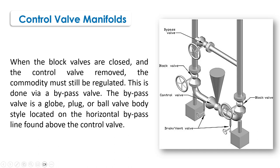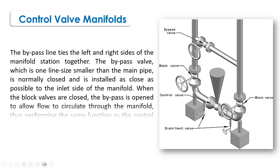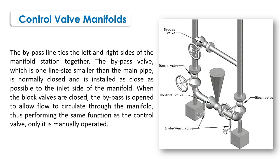The bypass line ties the left and right side of the manifold station together. The bypass valve is one line size smaller than the main pipe. It is normally closed and is installed as close as possible to the inlet side of the manifold. When the block valves are closed, the bypass is opened to allow flow to circulate through the manifold, thus performing the same function as the control valve, only it is manually operated.